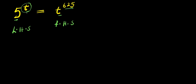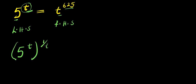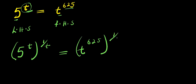For us to eliminate this t at the exponent, I'm going to multiply this exponent by 1 over t. So I have 5 to the power of t, raised to the power of 1 over t. This equals t to the power of 6/5, raised to the power of 1 over t. Because I have it here, I need to also do it here.